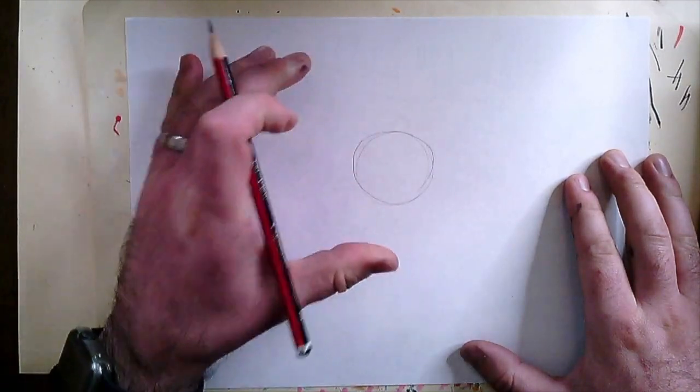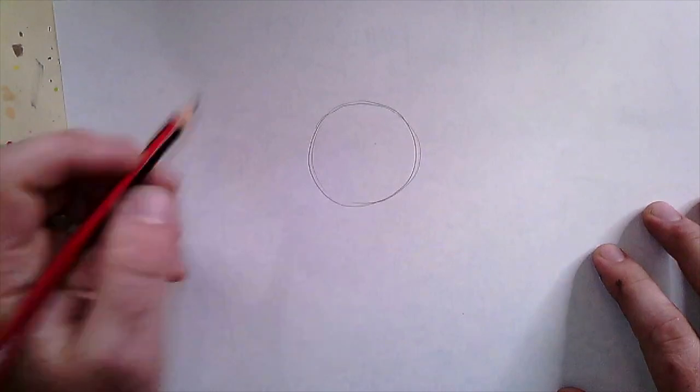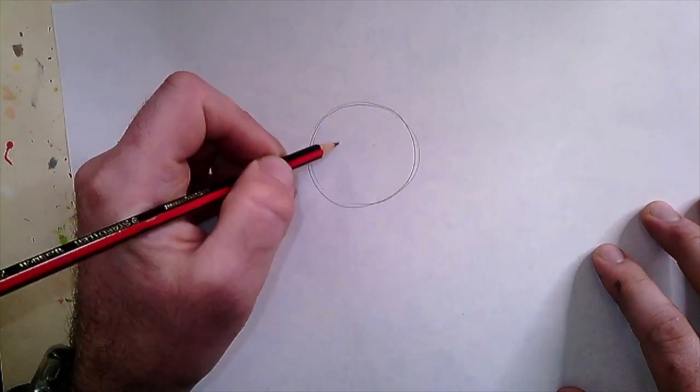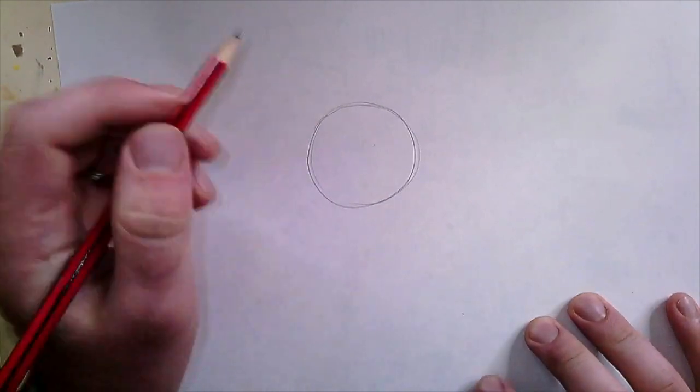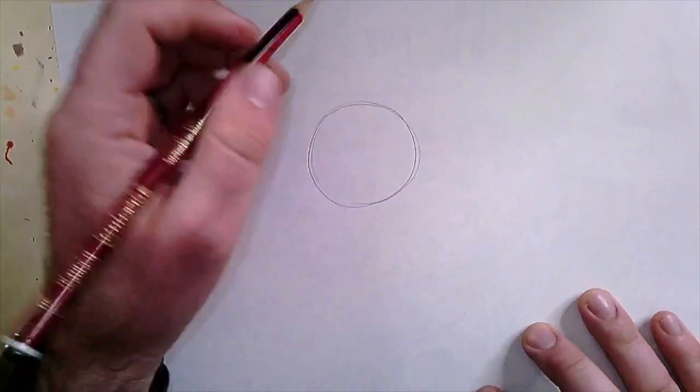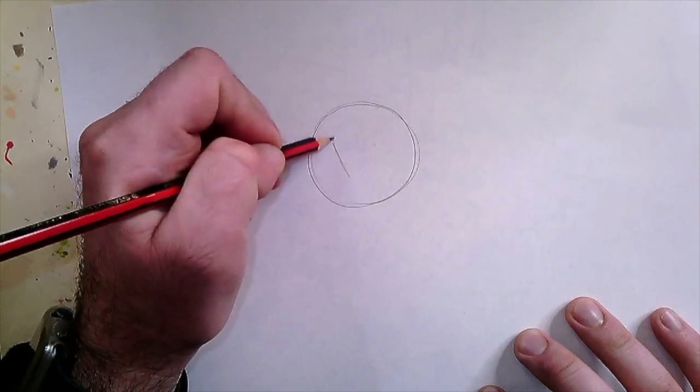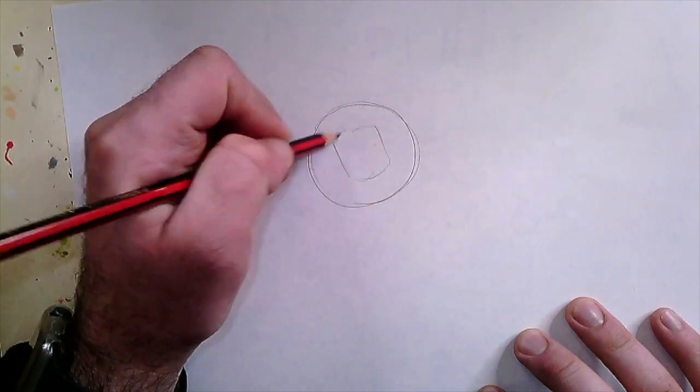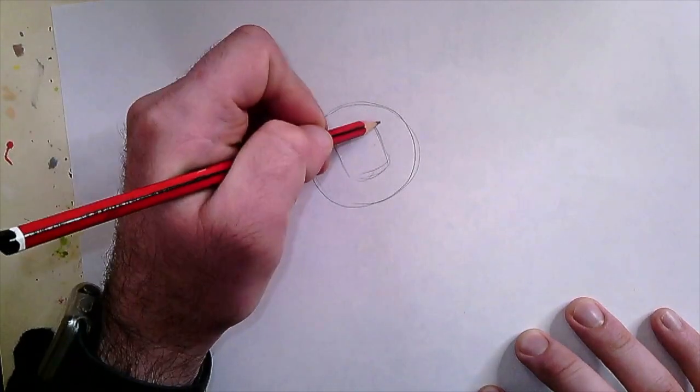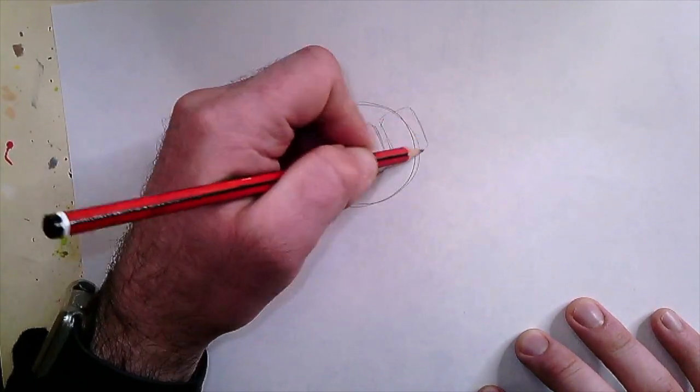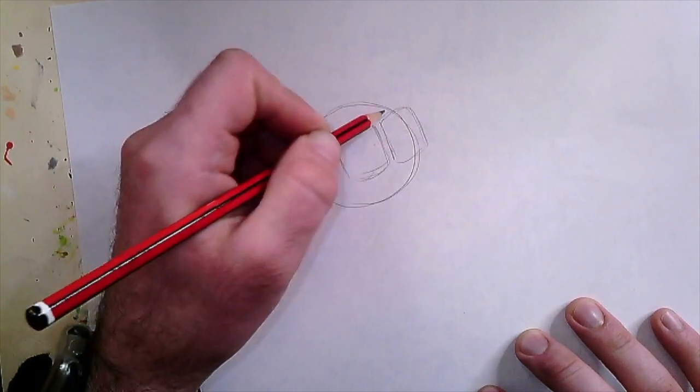The circle doesn't have to be perfect. We've got the circle—this is going to be Max's head. Now let's put a square in the center on a slight angle. So we've got a square inside the circle.